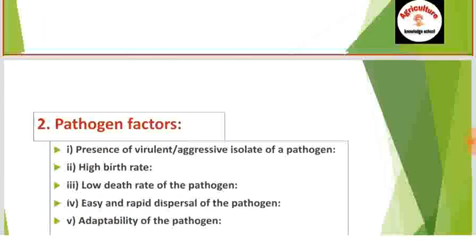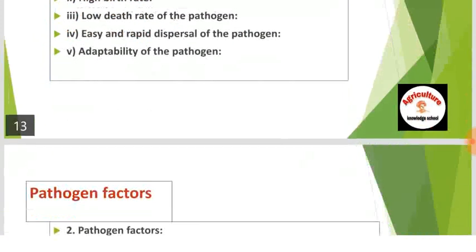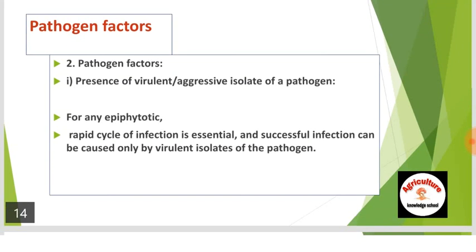Next are pathogen factors: first, presence of virulent or aggressive isolate of a pathogen; second, high birth rate of pathogen; third, low death rate of the pathogen; fourth, easy and rapid dispersal of the pathogen; fifth, adaptability of the pathogen. For any epiphytotic, a rapid cycle of infection is essential, and successful infection can be caused only by virulent isolates of the pathogen.